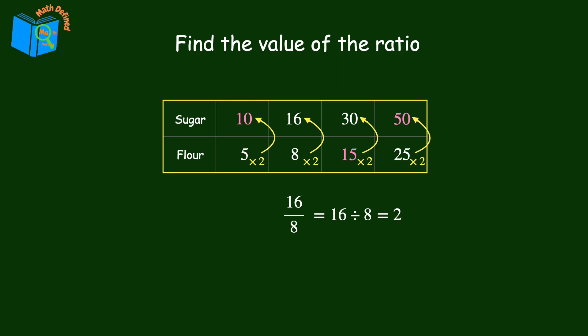One nice advantage to using the value of the ratio to find missing values is that it always works, and the multiplicative pattern stays the same throughout the table. Let's try a more challenging ratio table next.